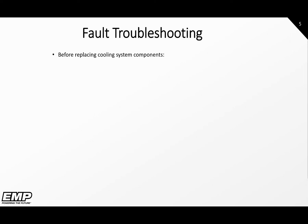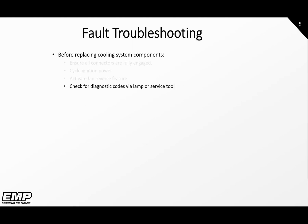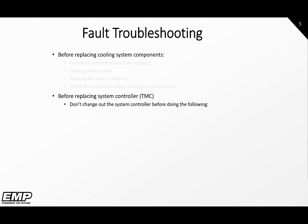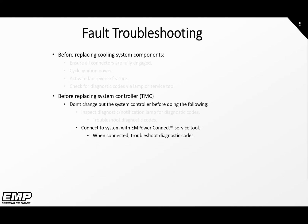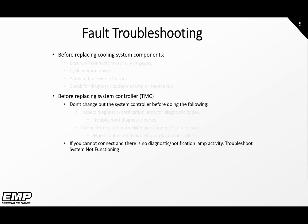Before replacing components on the cooling system, be sure to do the following: ensure all connectors are fully seated, cycle ignition power, activate a fan reverse cycle, and check for diagnostic codes via the lamp or service tool. If any are present, troubleshoot the diagnostic codes. Before replacing the system controller, also known as a TMC — short for thermal management controller — inspect the diagnostic notification lamp for active diagnostic codes. If any are present, troubleshoot the diagnostic codes. If the lamp is blinking an active code, it is recommended to connect to the system via the EMP service tool and troubleshoot the diagnostic codes. If you cannot connect and there is no diagnostic lamp activity, open the troubleshooting guide to the system not functioning page and follow the troubleshooting steps.